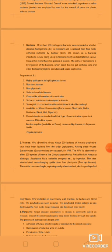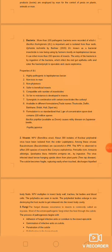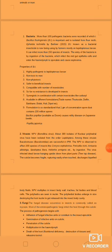So far no resistance is developed in insects. In combination with certain insecticides like carbaryl, Bt is available in different formulations with trade names such as Thuricide, Seaside, Delfin, Bactospeine, Biobit, Halt, and Dipel. The standardized formulation contains one gram of spore dust with 100 million spores.